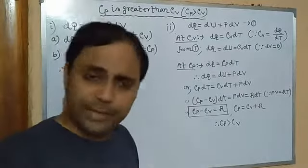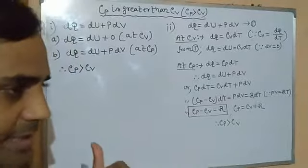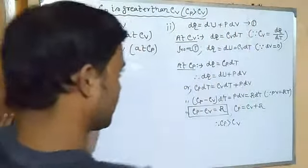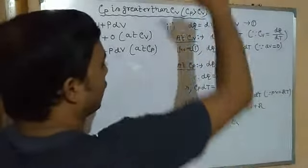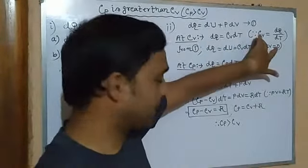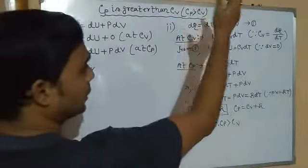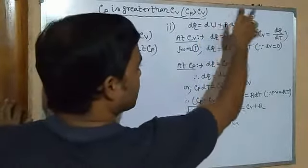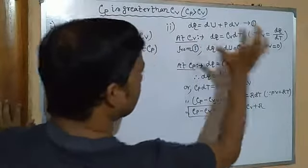Suppose there is an ideal gas at pressure P, volume V, and absolute temperature T. If we heat it and its temperature increases by a small amount dT, then according to the first law of thermodynamics: DQ = Du + PdV ... (equation 1). If the gas is heated at constant volume, by the definition of specific heat at constant volume: DQ = Cv·dT. Since there is no change in volume, PdV = 0, so DQ = Du = Cv·dT.